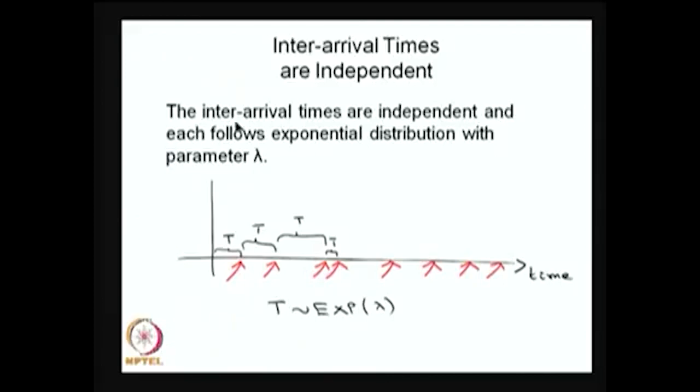The converse is also true. If the inter-arrival times are independent and each follows an exponential distribution with parameter λ, then you can conclude the arrival process is a Poisson process. That means: arrival process is Poisson implies inter-arrival times are exponentially distributed and independent; and conversely, if inter-arrival times are independent and exponentially distributed with parameter λ, then the arrival process is a Poisson process with parameter λ.